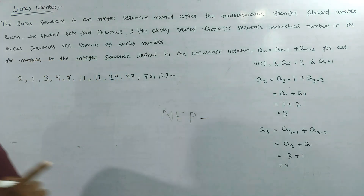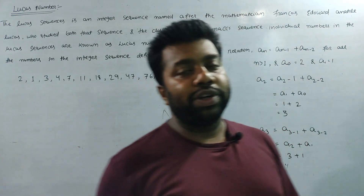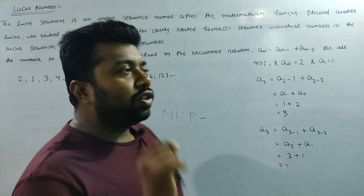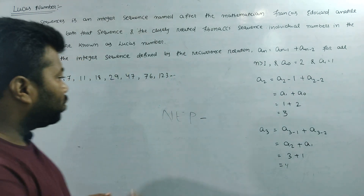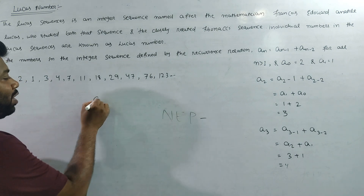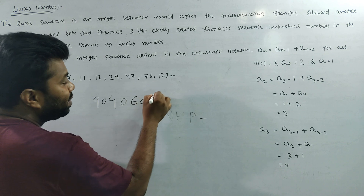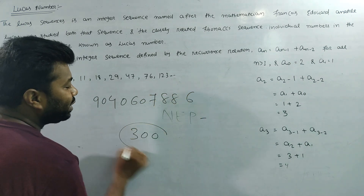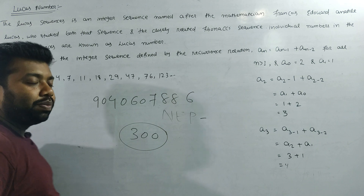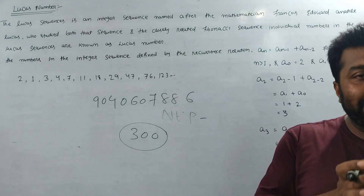You have two core papers, also called Calculus, Algebra and Number Theory. You can contact all the details of the paper on our channel and contact us at 9040607886. Each paper is only 300 Rs, so the core paper is 600 Rs.